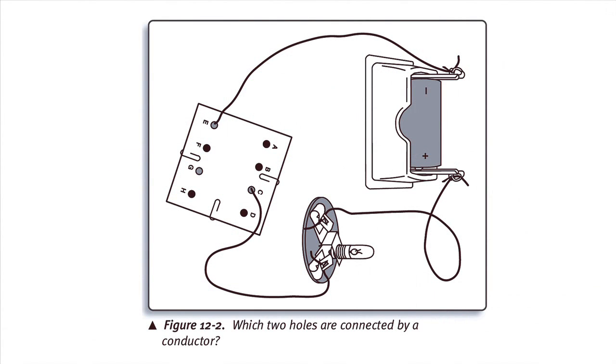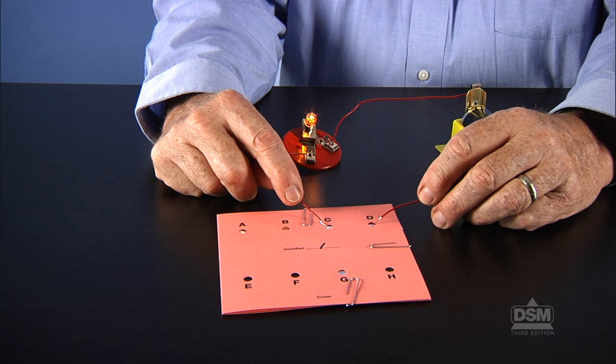Lead a class discussion of their results and encourage students to explain how their circuits work. Students should articulate that when two holes are connected by aluminum foil and are touched by the circuit ends, the circuit closes and the current flows from the battery through the wire, across the aluminum foil, into the other wire, through the bulb, and finally to the other side of the battery. As a result, the bulb lights.